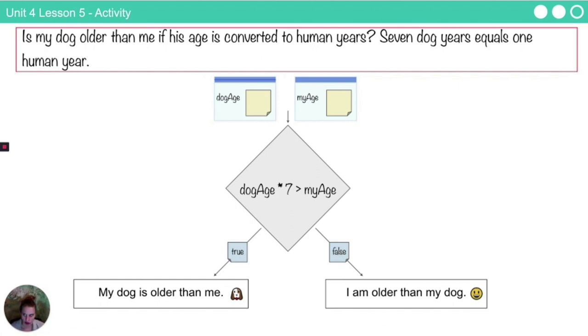Here's an example of that flow chart. So dog age, my age are the two inputs that I have added here. Dog age times seven is greater than my age. If that is true, my dog is older than me. If that is false, I am older than my dog. So for example here, if my dog age were two and my age is 15. Dog age times seven. Two times seven is going to be 14. Is 14 greater than 15? No it is not. So at this point, I am older than my dog.